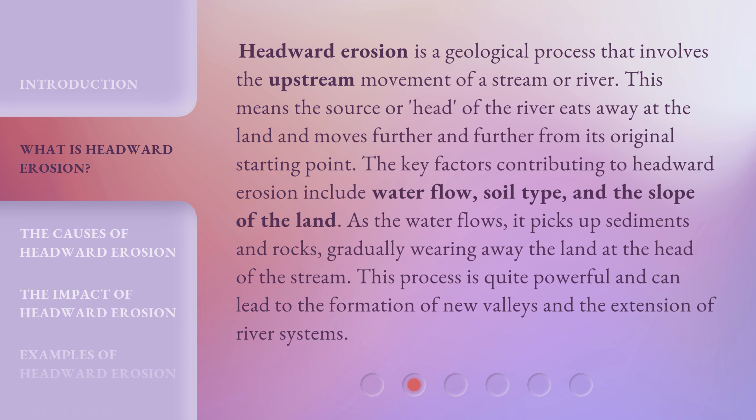The key factors contributing to headward erosion include water flow, soil type, and the slope of the land. As the water flows, it picks up sediments and rocks, gradually wearing away the land at the head of the stream. This process is quite powerful and can lead to the formation of new valleys and the extension of river systems.